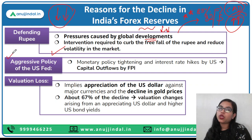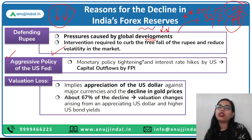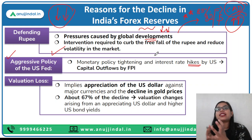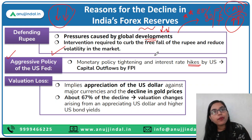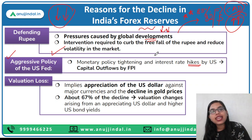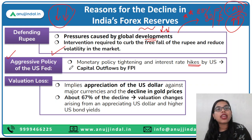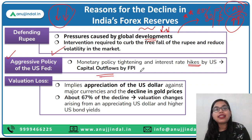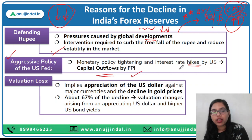The second reason is the aggressive policy of the US Fed. Because of increasing inflation in developed countries, they have been tightening monetary policy and raising interest rates. Since the US dollar is considered a safe asset, foreign portfolio investors (FPIs) have been selling their Indian investments, taking out their money, and investing in the US, resulting in large capital outflows from India.